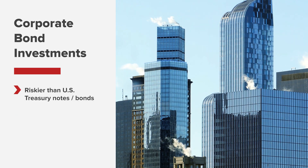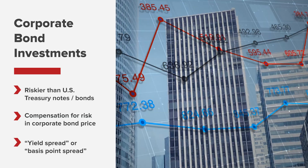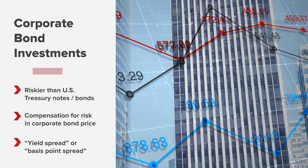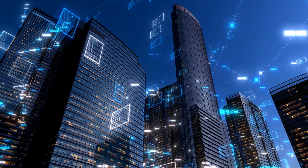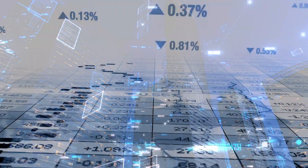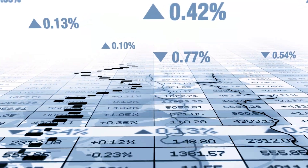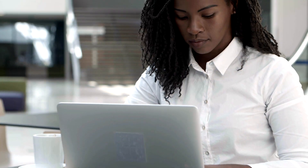Since corporate bond investments are considered riskier than U.S. Treasuries, investors are typically compensated for this risk in the price of the investment. This compensation is often known as the yield or basis point spread. While the maturity of the issuance, as well as the issuer's creditworthiness and bond's liquidity, each play a significant role in determining how much risk an investor will assume, interest rate movements themselves will also directly affect the value of a bond. A corporate bond investor will therefore make a judgment about the direction of interest rates before making a purchase.